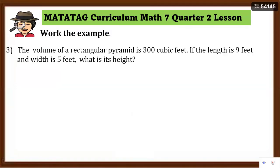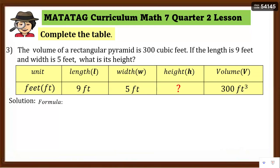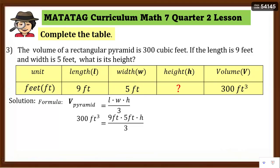Example 3: The volume of a rectangular pyramid is 300 cubic feet. If the length is 9 feet and the width is 5 feet, what is the height? Complete the table: unit = feet, length = 9 feet, width = 5 feet, height = unknown (h), volume = 300 cubic feet. Solution: write the formula V = (length × width × height) / 3. Substitute the known values: 300 = (9 × 5 × h) / 3.